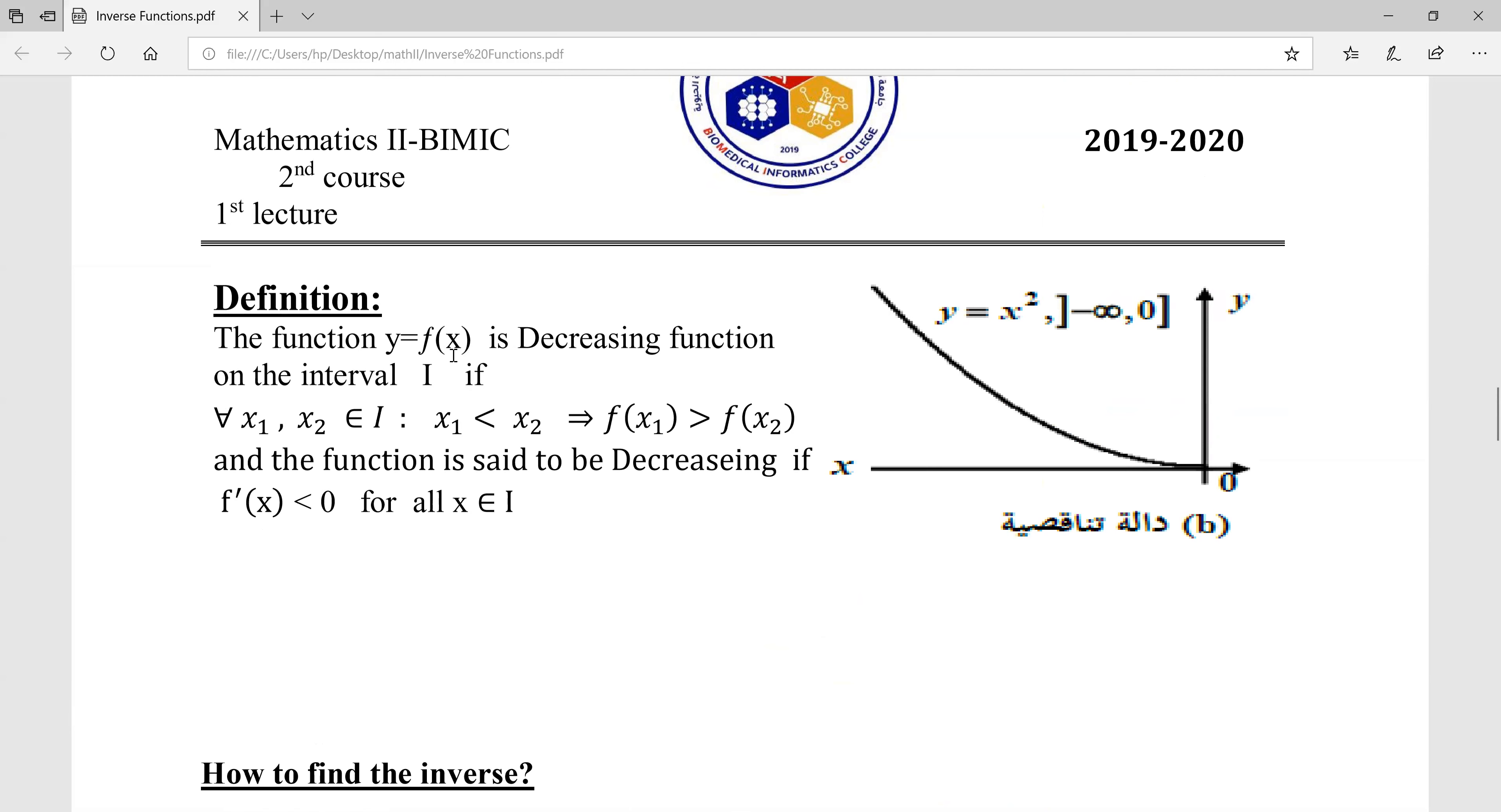f(x) is a decreasing function on the interval I if for x₁, x₂ in interval I, x₁ < x₂ leads to f(x₁) > f(x₂). Look here: x₁ is smaller than x₂, but its image is larger than f(x₂). The function is said to be decreasing if f'(x) < 0 for all x in I. When the first derivative is always negative, the function is decreasing.